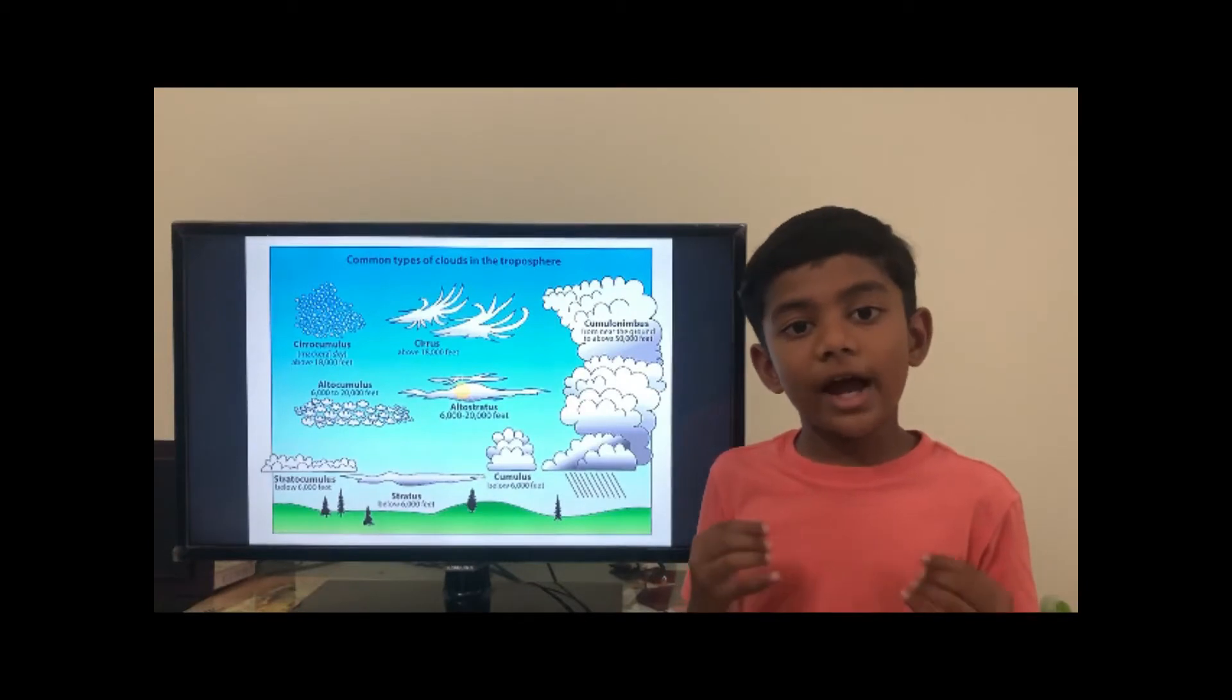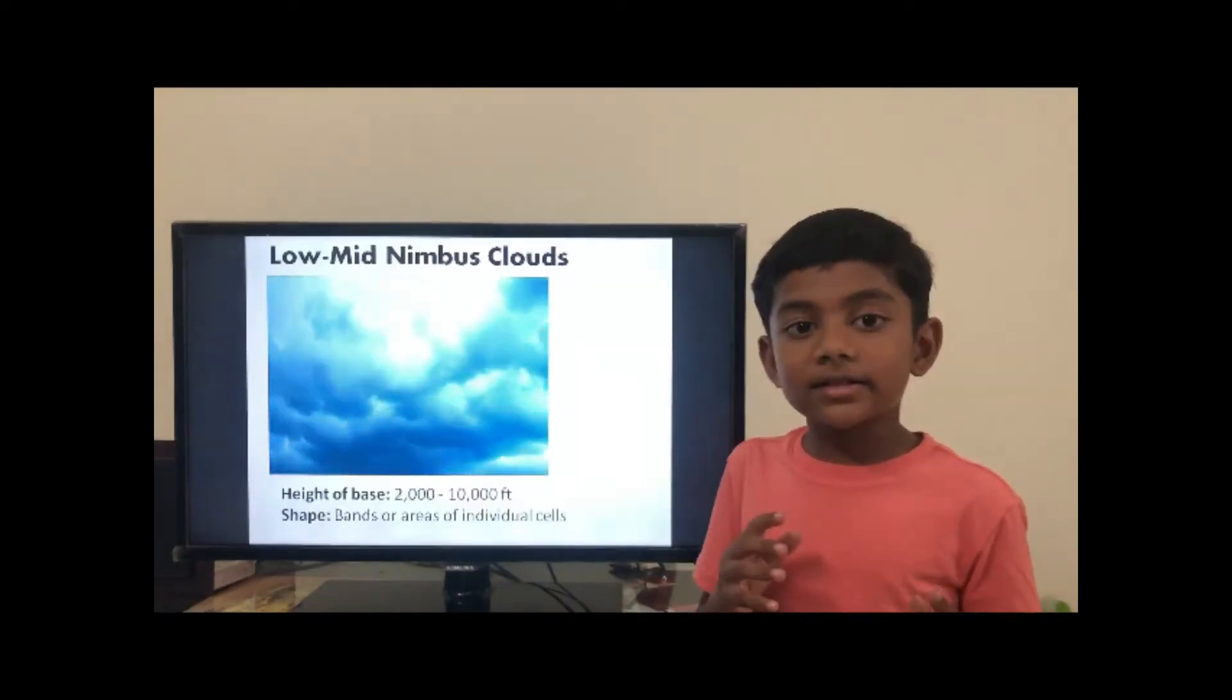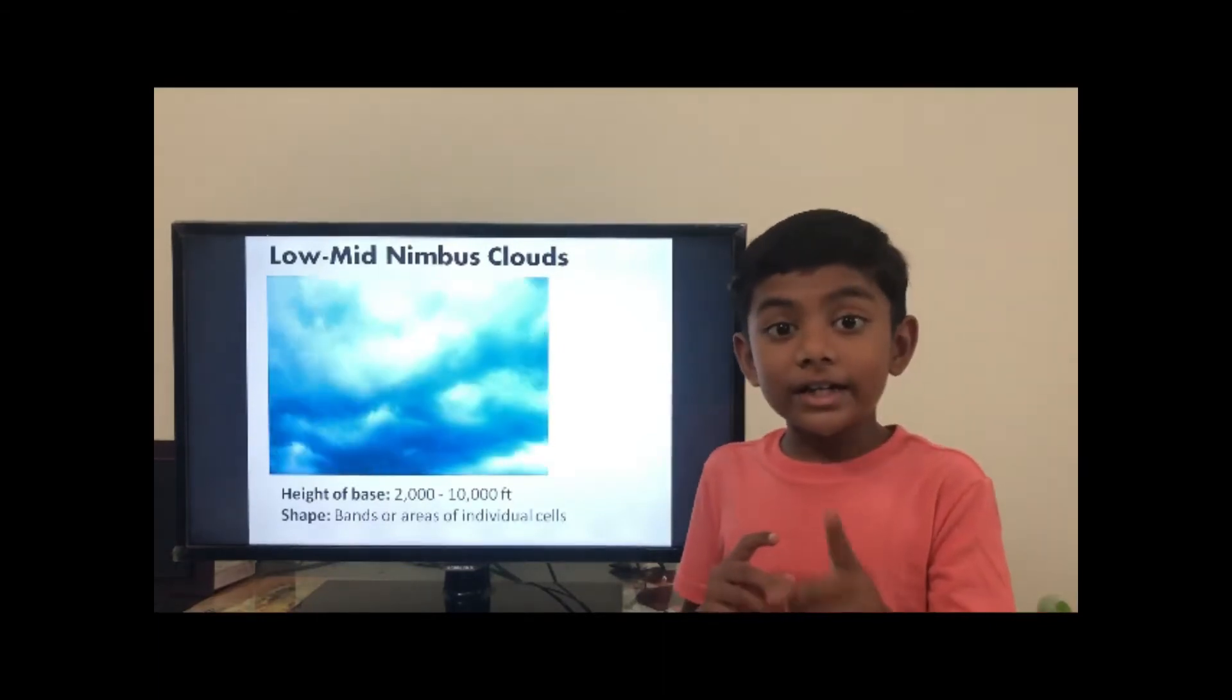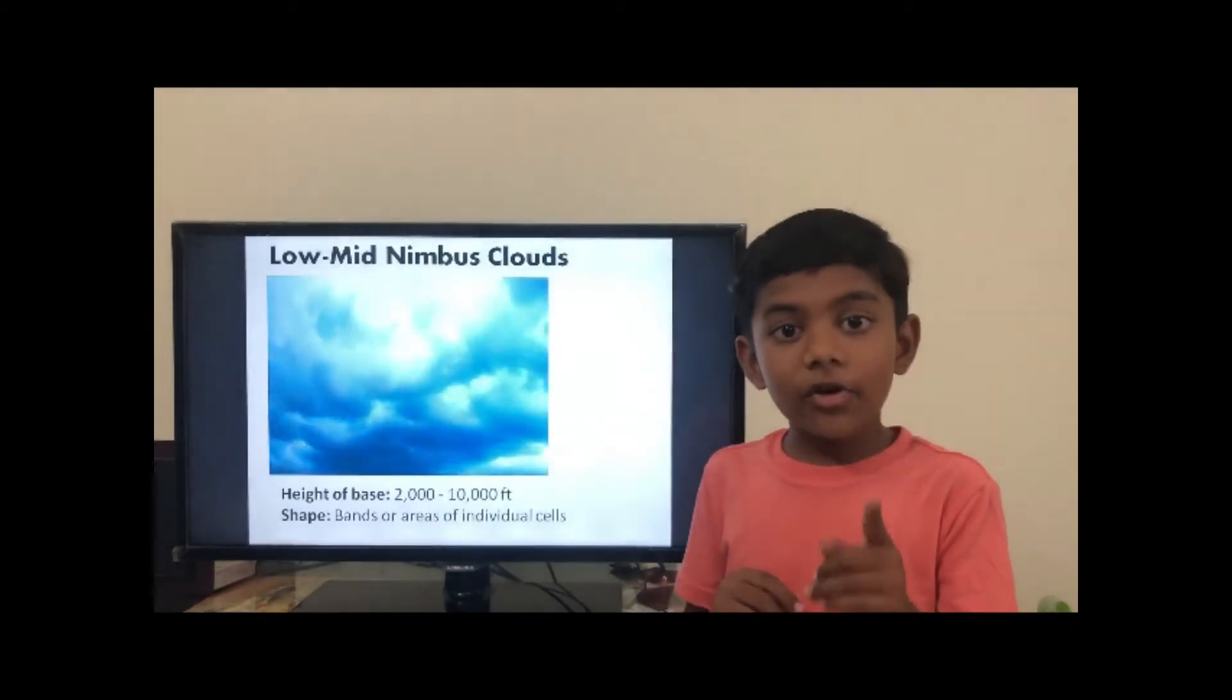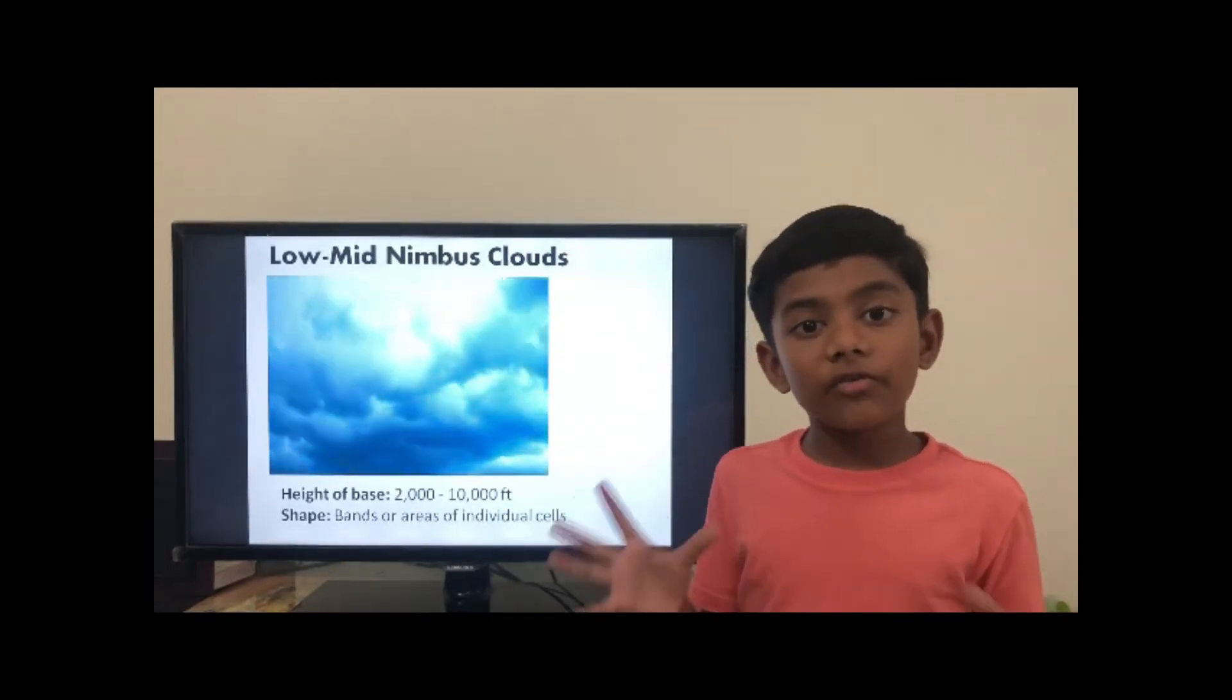Next, let's talk about the stratocumulus. Stratocumulus often resemble honeycomb round masses and rolls, and it is puffy and patchy. Next is an interesting one: fog. Do you know fog is a low cloud? Fog is a cloud which often appears right close to the ground.